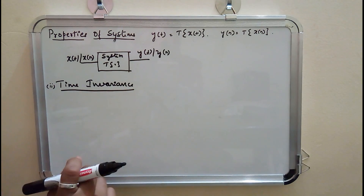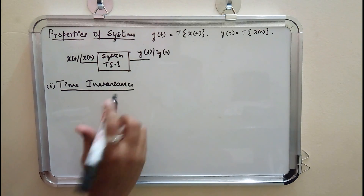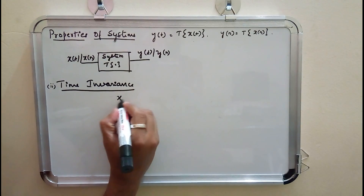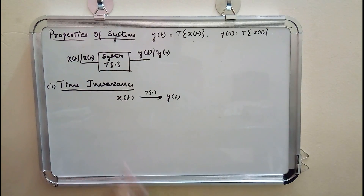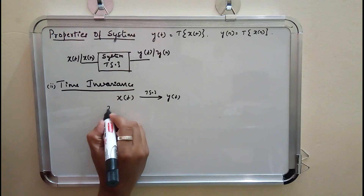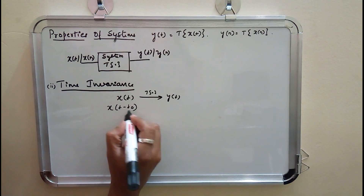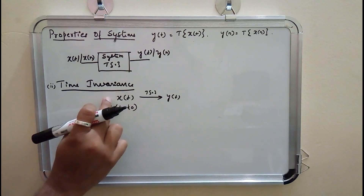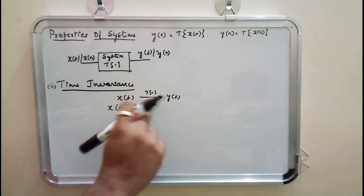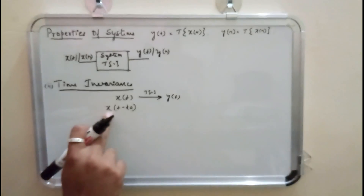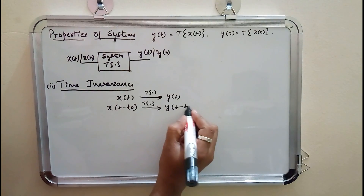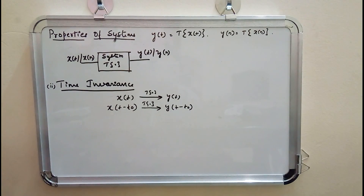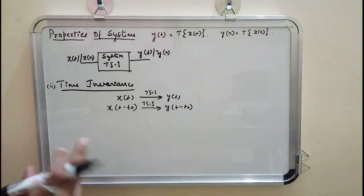The next property is time invariance. We know X of T undergoes transformation and gives Y of T through the system. Now if there is a shift in the input by an amount T0, then there should be a corresponding shift in the output. If this condition is satisfied, the system is said to be time invariant, and the property is called time invariance.